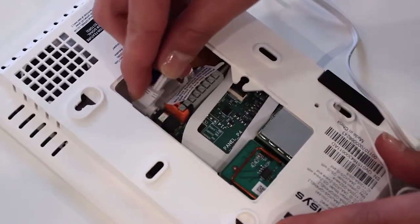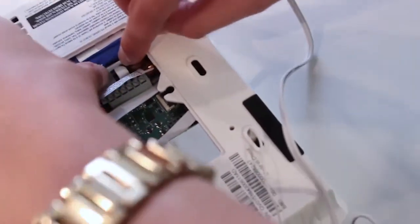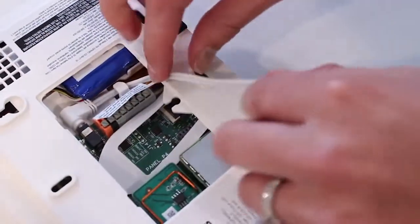Next, plug the included barrel jack power wire into the back, making sure to route the wire behind the strain relief tabs to ensure that it doesn't come out.